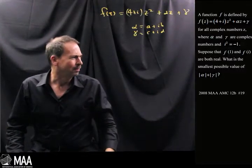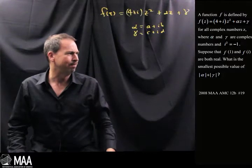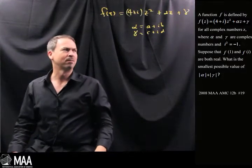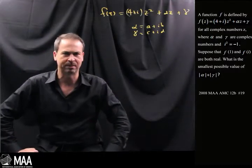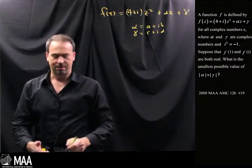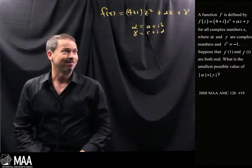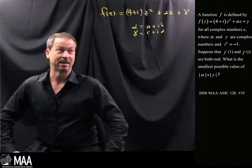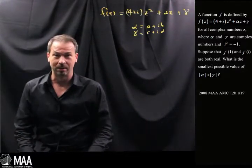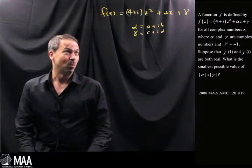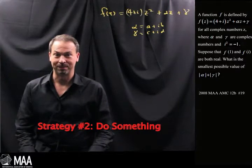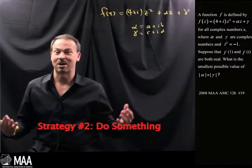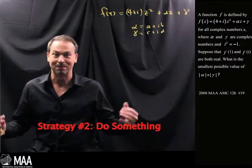Now what are we doing? Suppose that f(1) and f(i) are both real. What's the smallest possible value of |α| + |γ|? I don't know how I'm going to handle this question. I've actually not seen questions like this before. Well, I guess the best strategy here is strategy number two, which is do something.